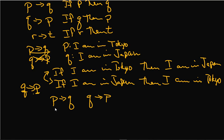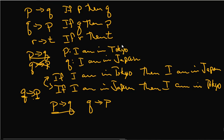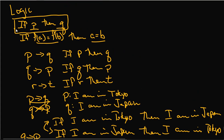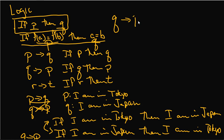If you prove one of them — say you prove P arrow Q, where F of A equals F of B is P and A equals B is Q — that's not the same thing as proving Q arrow P. If I wanted to say if A equals B then F of A equals F of B, that's a separate proof. They're not the same statement. P arrow Q is not the same as Q arrow P.